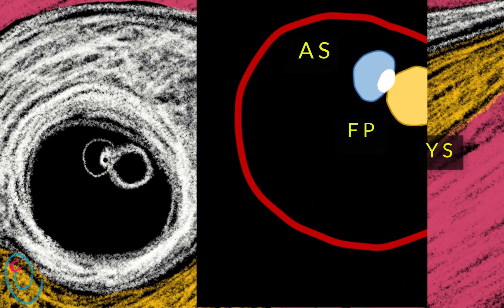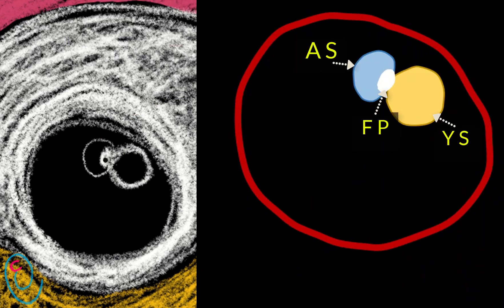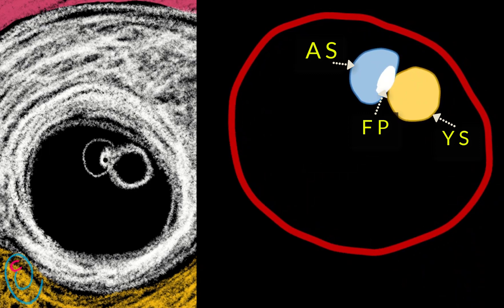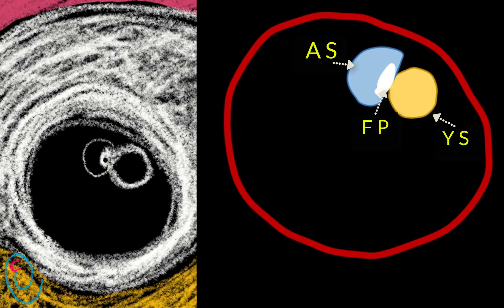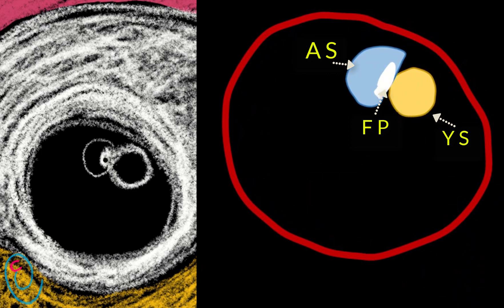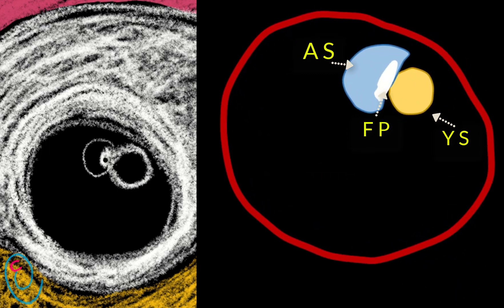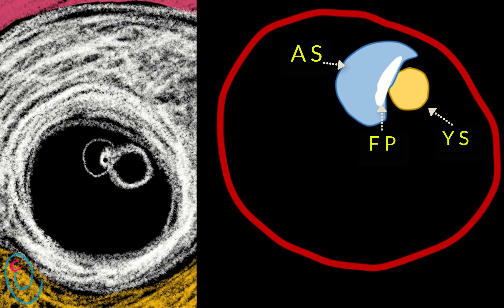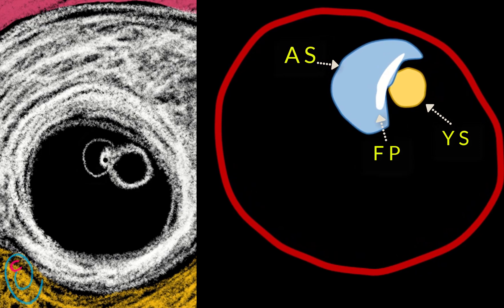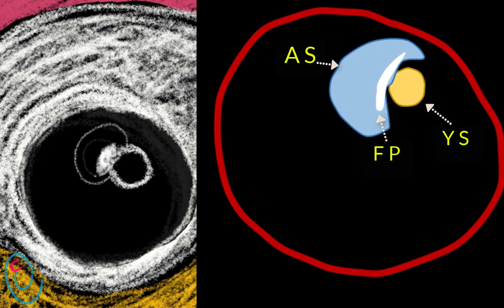Before 10 weeks, the fetal pole, amniotic sac, and chorionic sac will grow at a similar rate, while the yolk sac is decreasing in size.